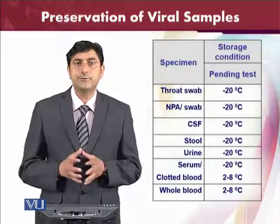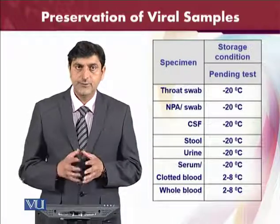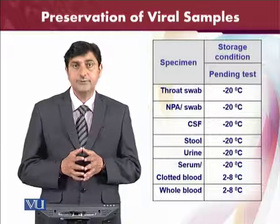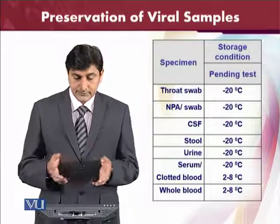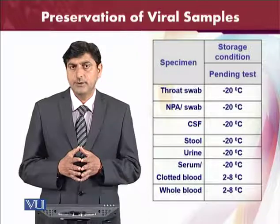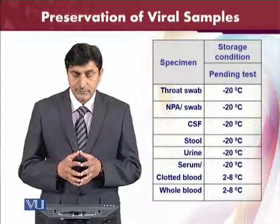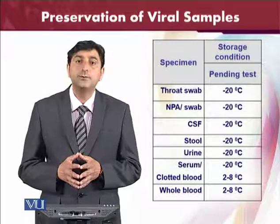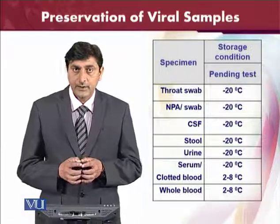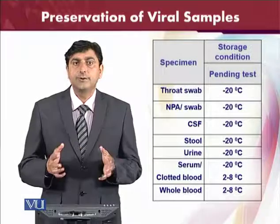We will now review different specimens and their storage conditions for pending tests — when a test has been delayed for two or three days. Storage conditions differ based on the specimen type. Throat swabs, nasal swabs, NPA swabs, and cerebrospinal fluid swabs can be stored at minus 20 degrees centigrade. Stool, urine, and serum samples can also be stored at minus 20 degrees centigrade for further investigation. However, clotted blood and whole blood samples can be kept at 2 to 8 degrees centigrade for further testing.